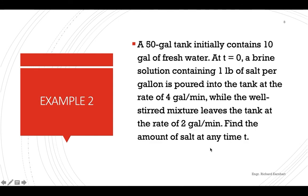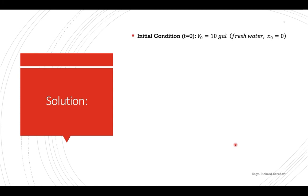Let's have another example. A 50-gallon tank initially contains 10 gallons of fresh water — that is your initial volume. At t equals 0, a brine solution containing 1 pound of salt per gallon is poured into the tank at the rate of 4 gallons per minute — that is E, and the initial concentration B equals 1. The well-stirred mixture leaves the tank at the rate of 2 gallons per minute — that is F. Since it is fresh water, the initial amount of salt X-sub-O is 0. Find x as a function of time.